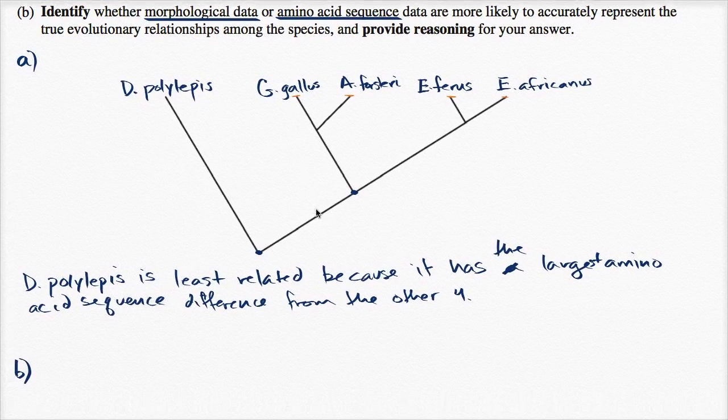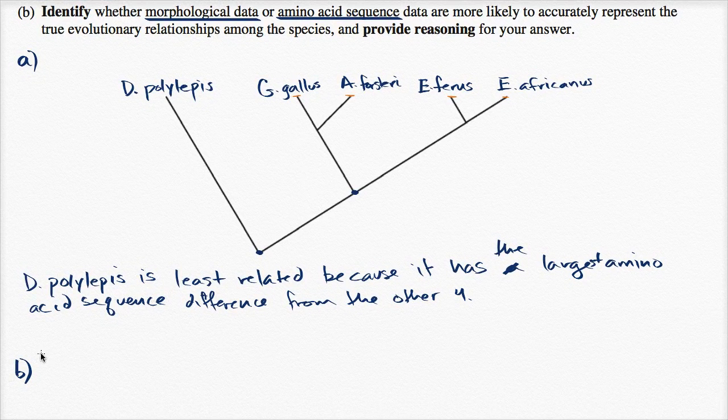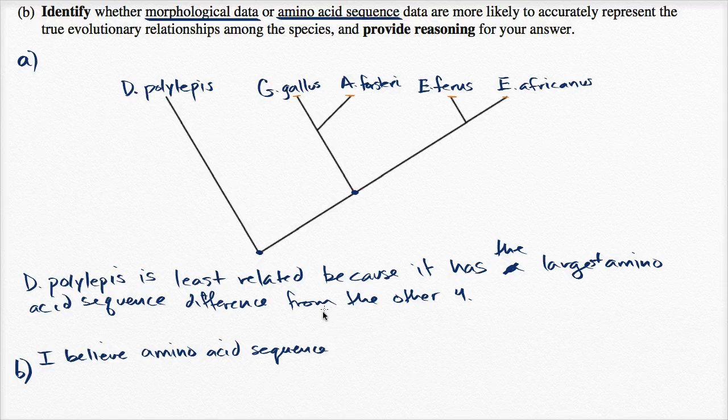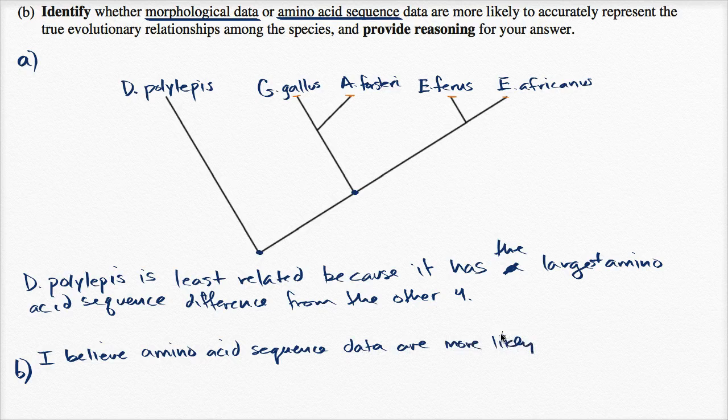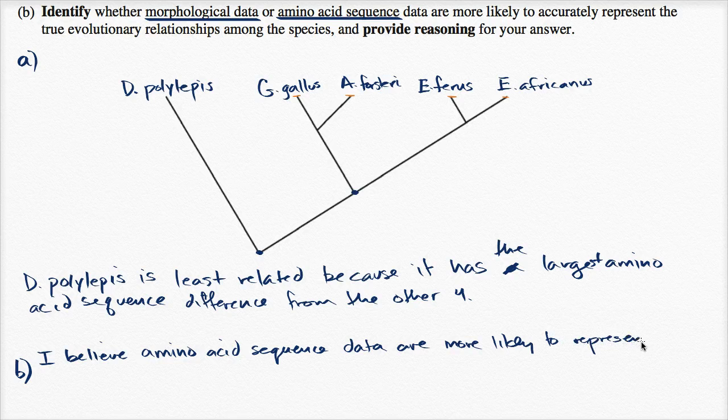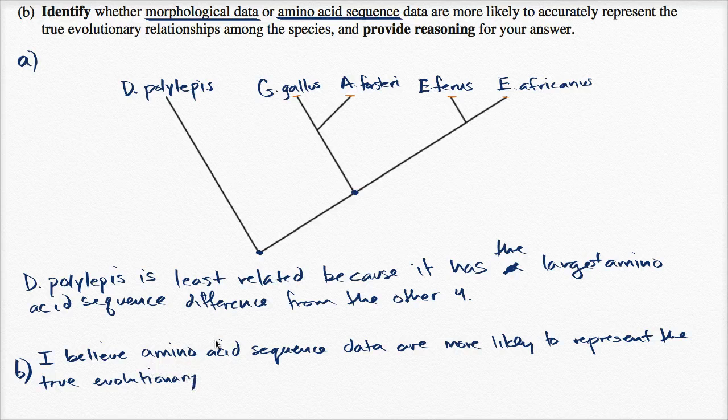While amino acid sequence, you're looking at how are their proteins actually made up? I personally would go with the amino acid data. So, I believe amino acid sequence data are more likely to accurately represent the true evolutionary relationship.